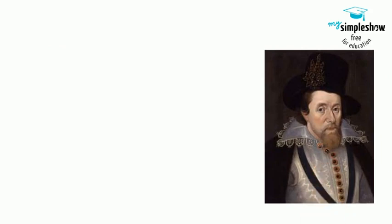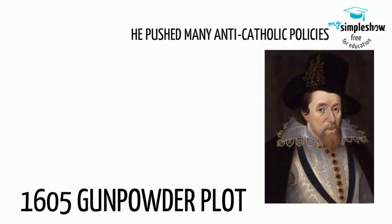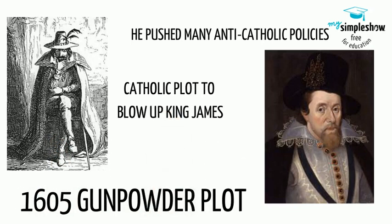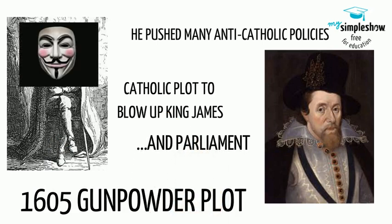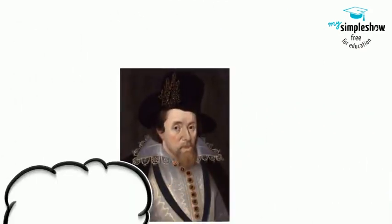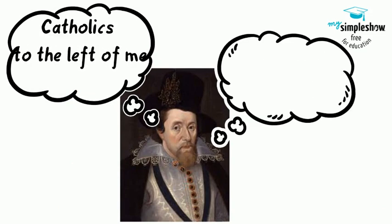The other resistance was due to his continued push against the Catholic Church. It was during his reign that the 1605 Gunpowder Plot was discovered. Guy Fawkes was found in the cellar of Parliament with kegs of gunpowder, ready to blow up Parliament and King James in the name of Catholicism. The discovery of the plot pushed James' anti-Catholic policies even further in England and Ireland.